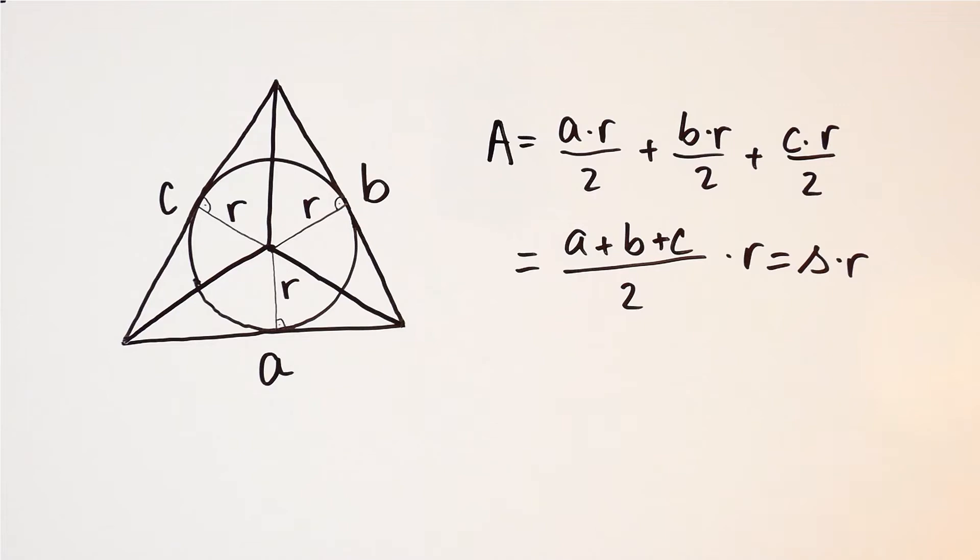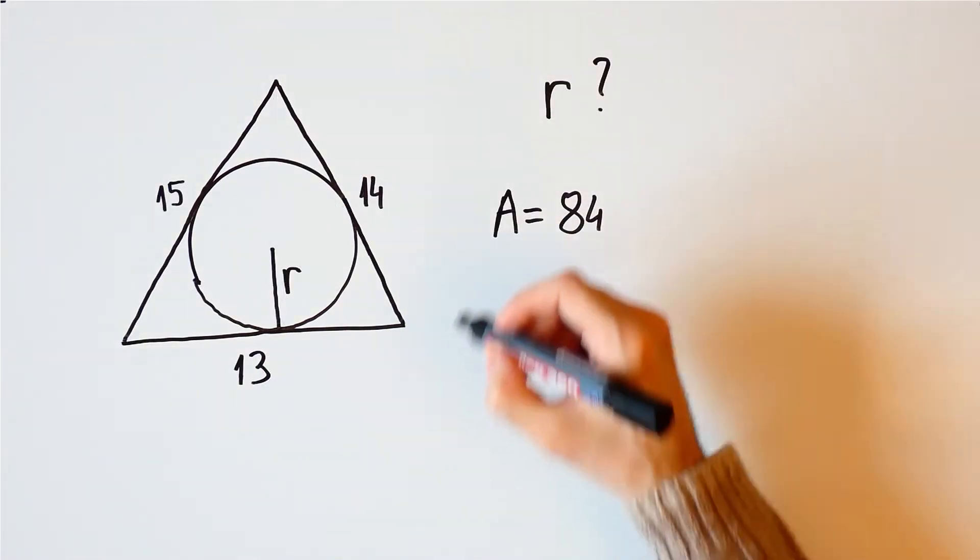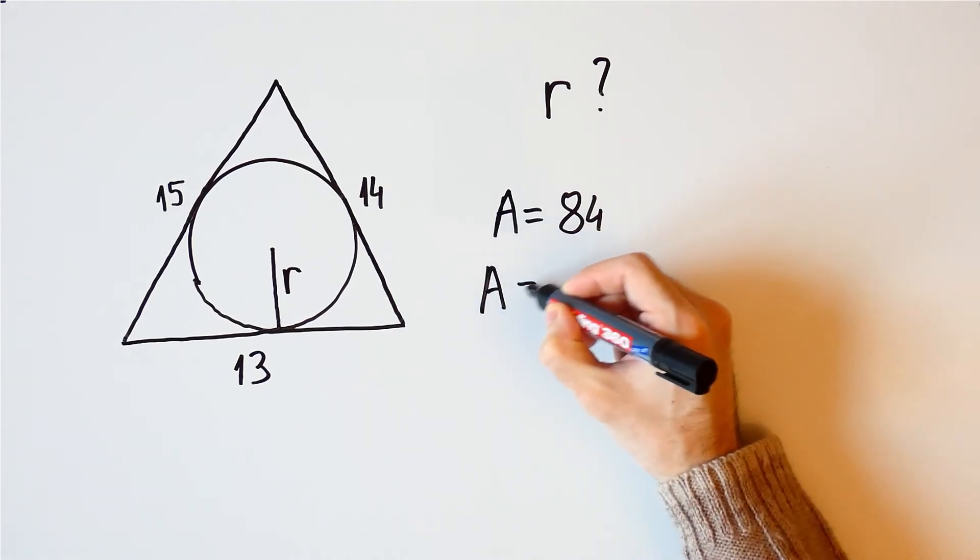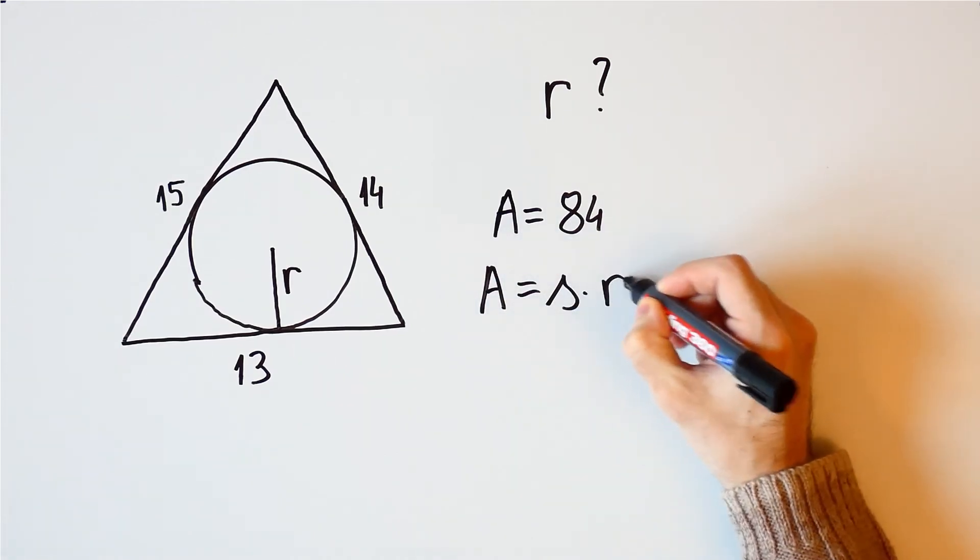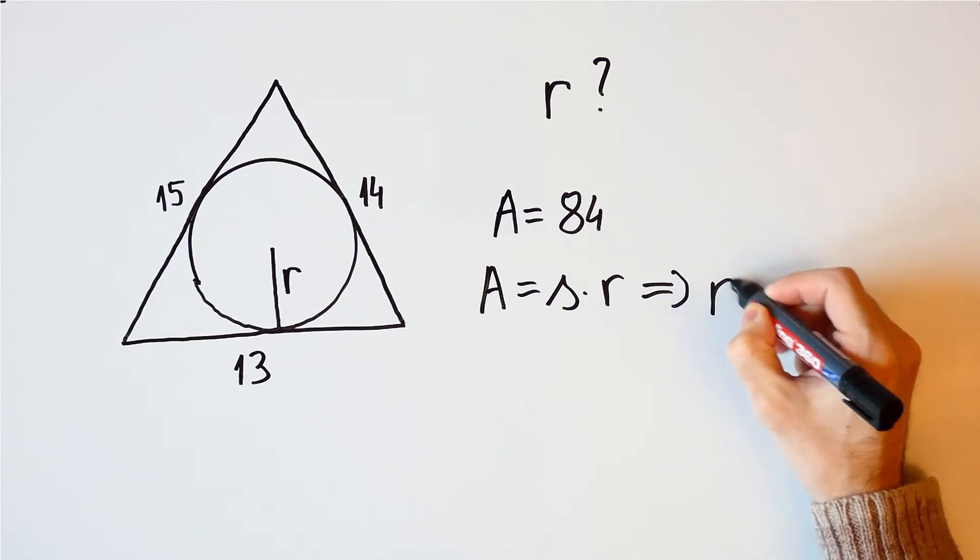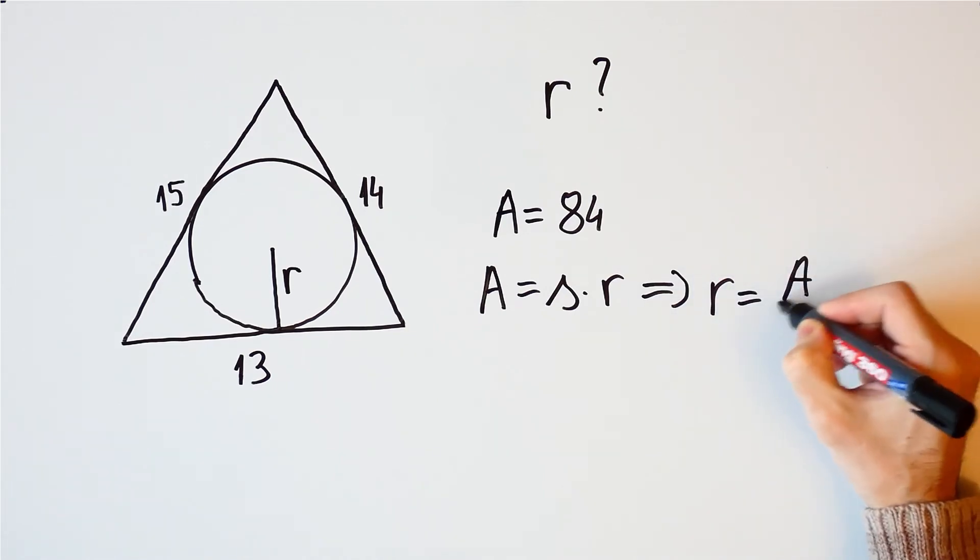We'll use this expression to find the inner radius in our problem. The area is equal to s times r, which means that r is equal to A over s.